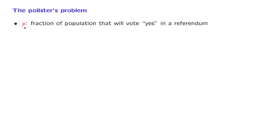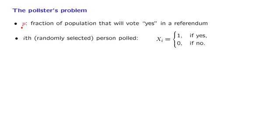What you do is that you go ahead and you select at random a number of people out of the population. And for each person, you record their answer, whether they intend to vote yes or whether they intend to vote no.